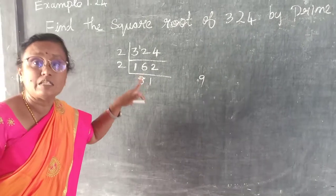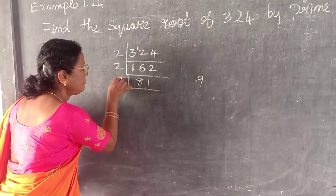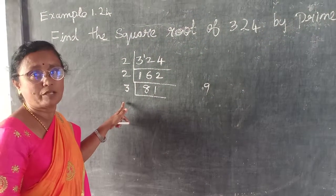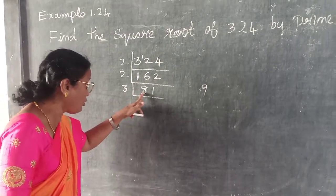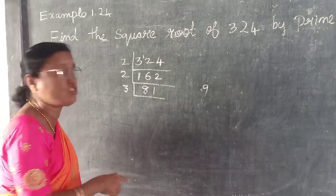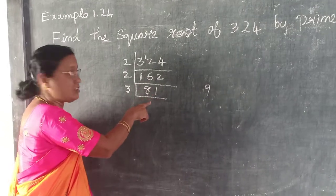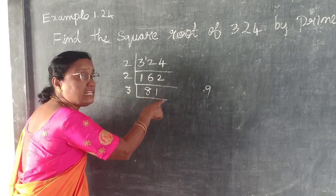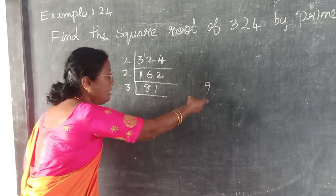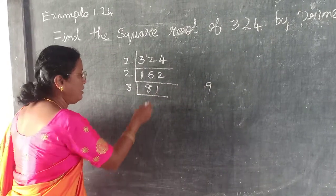81 is also divisible by 3. So let us check. Before taking this number, you have to check whether it is divisible by 3. Test of divisibility — the final answer should be divisible by 3, then automatically the different number is divisible by 3.